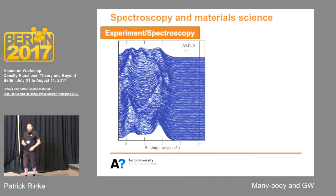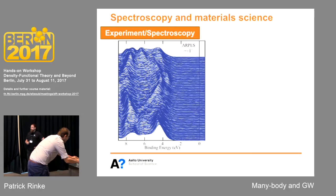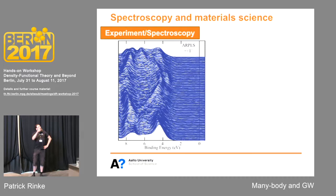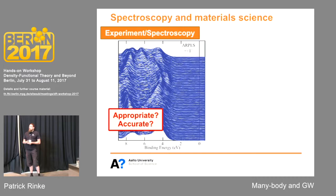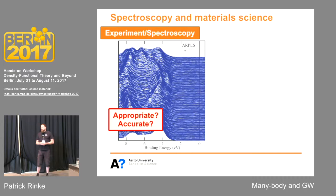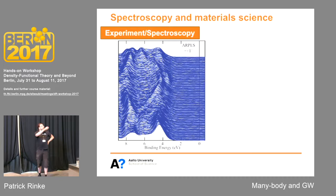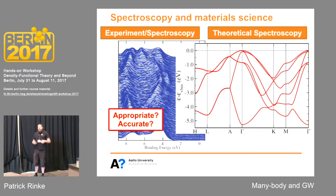Let's start with spectroscopy. This is mostly an experimental term. You have a spectrometer, a method that perturbs the system, and then you record spectra. Here's a typical example of a photoemission spectrum, angle-resolved photoemission, ARPES, where you have many different lines. Each one is a spectrum, and you vary the incident angle of the light to get spectra at different angles and extract a band structure. You have to ask yourself: is it the right experiment for the question you were asking, and is it accurate enough?